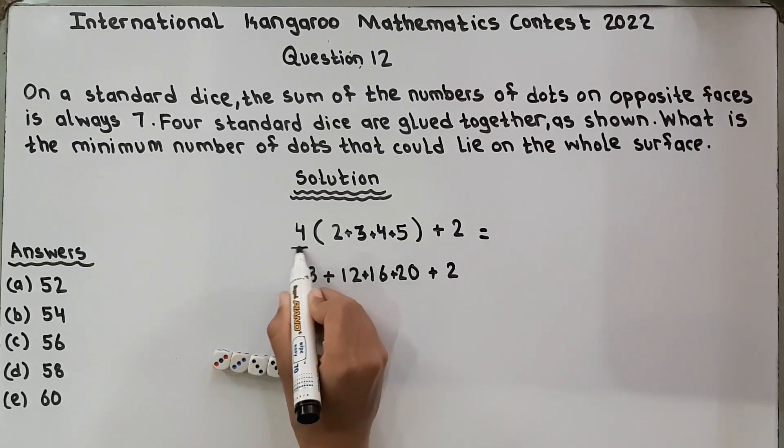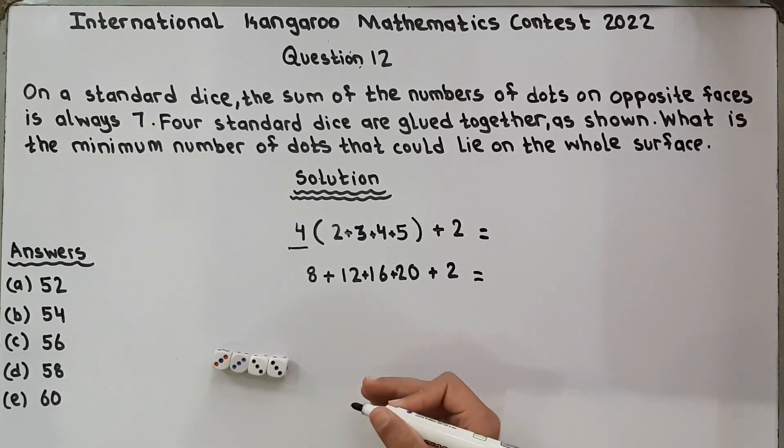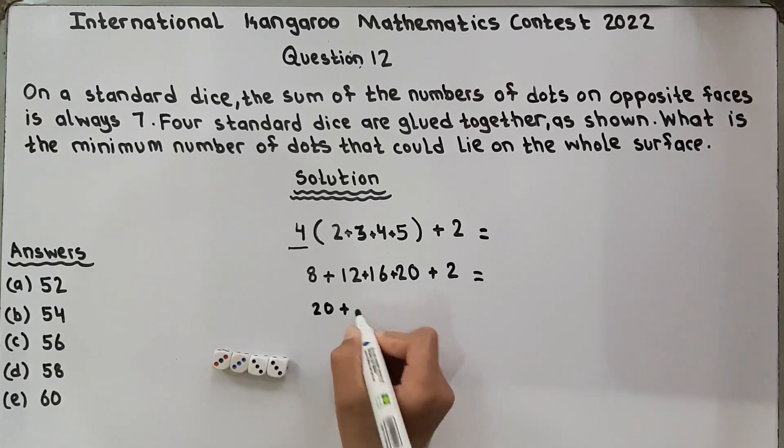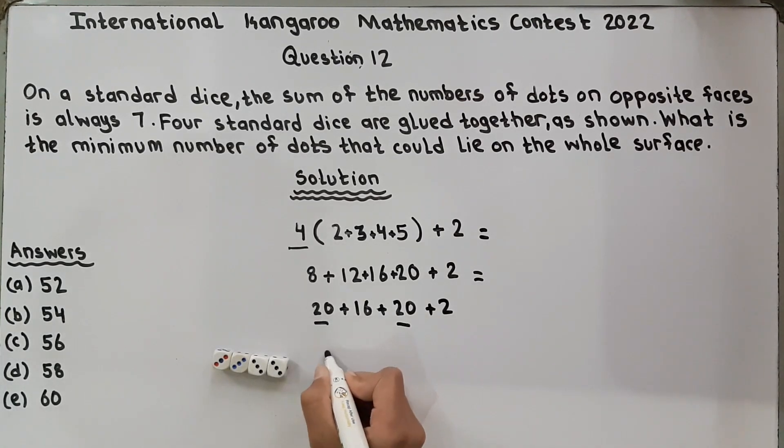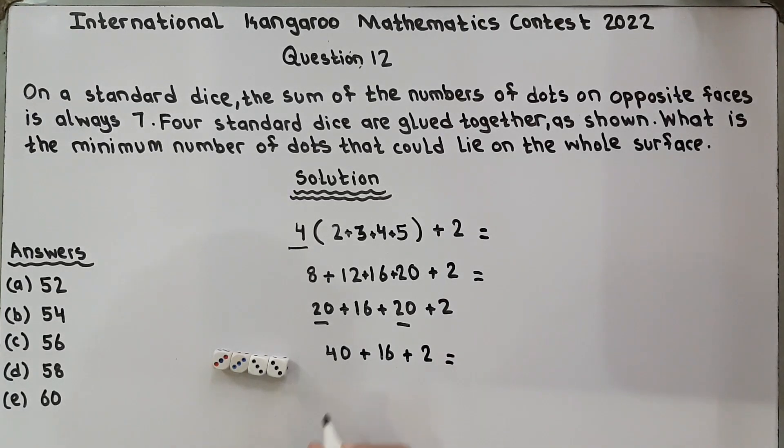8 plus 12 plus 16, plus 20, plus 2. And 20 plus 16 plus 20 plus 2. 20 plus 20 is equal to 40. 40 plus 16 plus 2. 40 plus 16, 56, plus 2 is equal to 56 plus 2 is equal to 58.